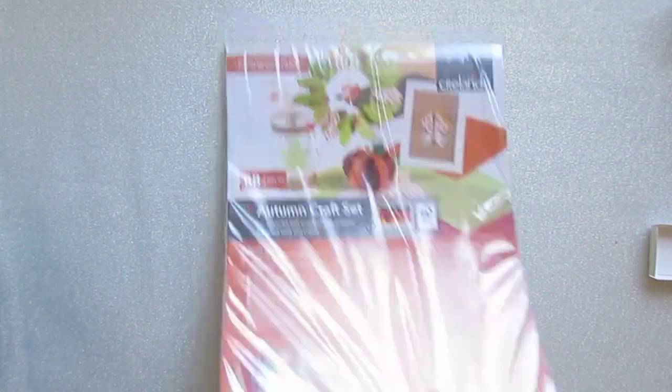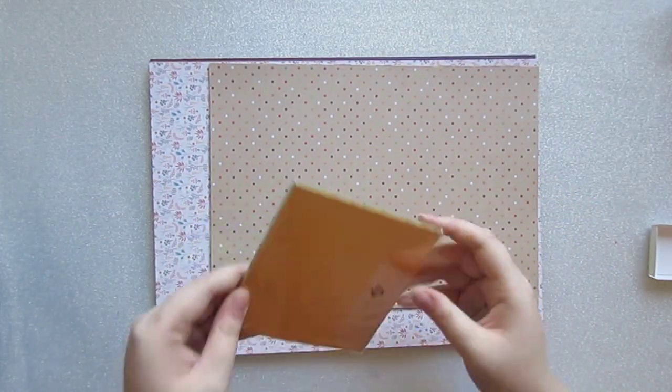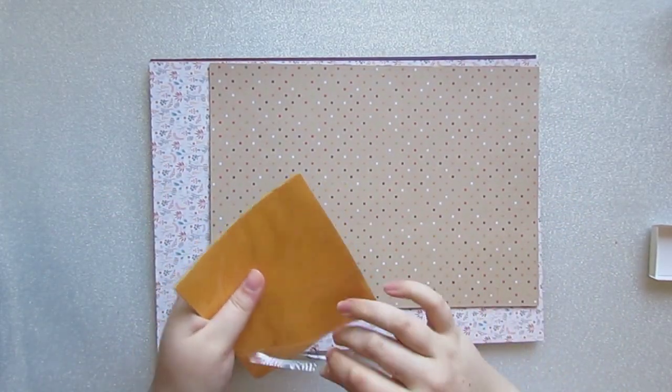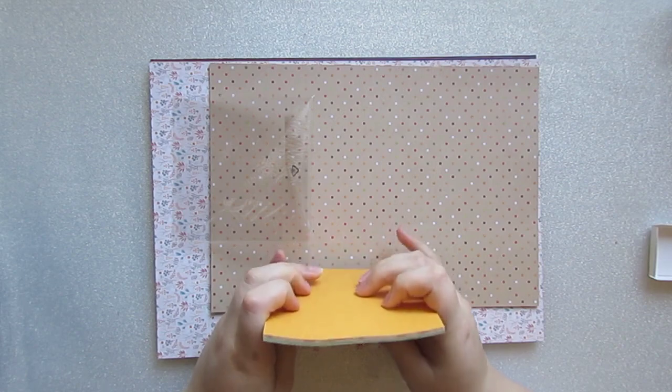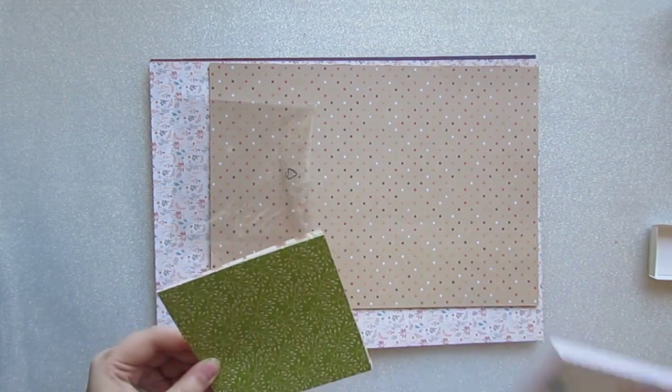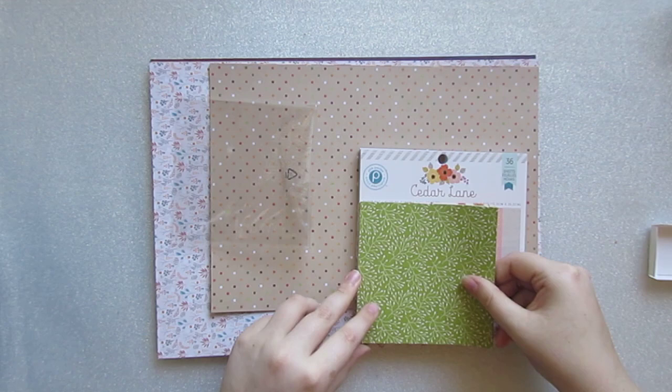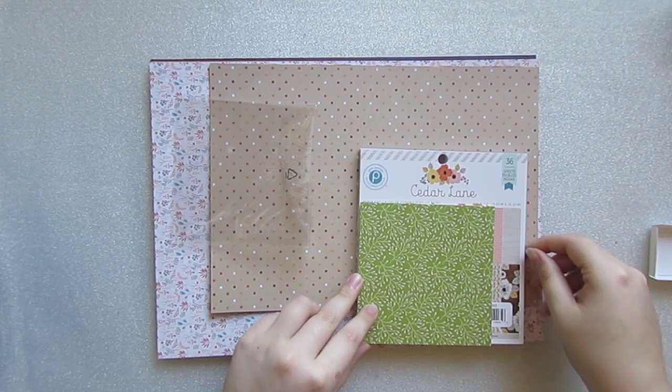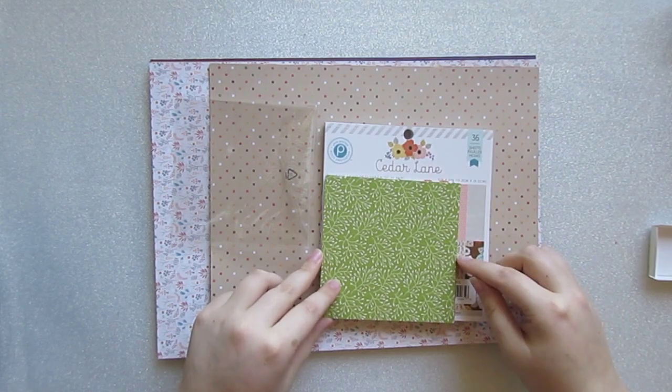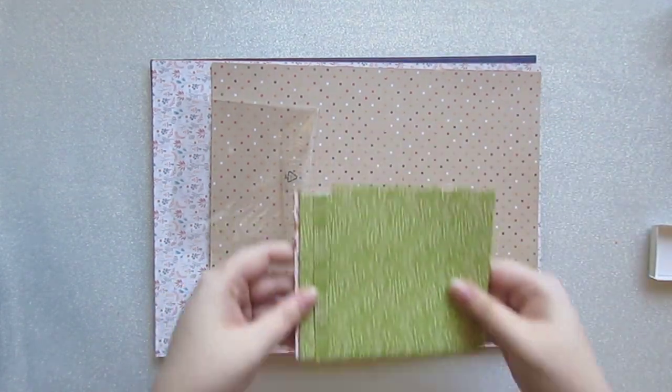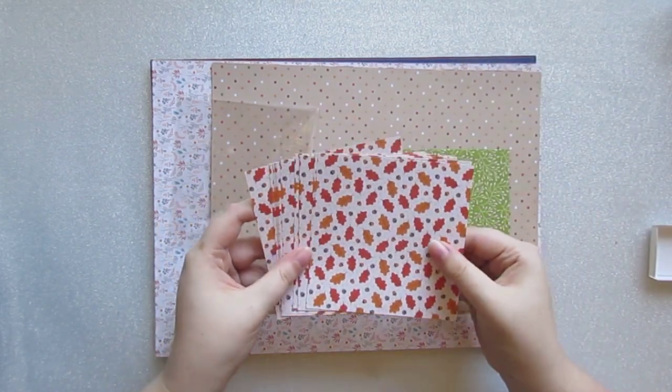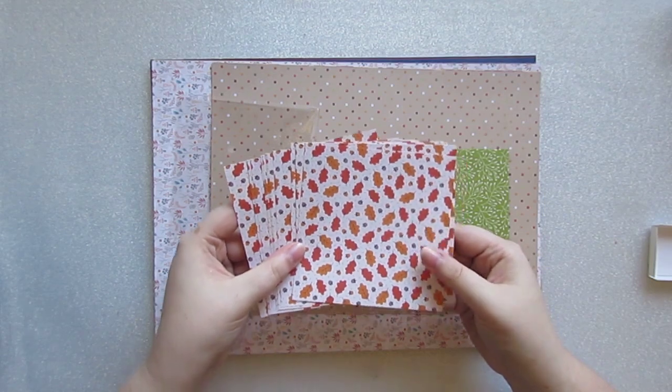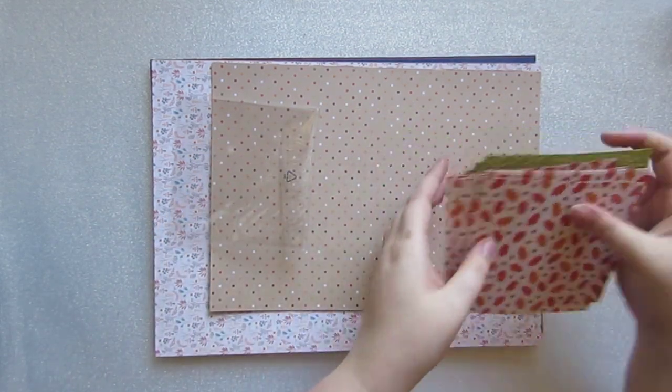I'll put that out of the way and show you the autumn craft set next. First off in this little pack, I think they're not big enough to be 6x6. They don't look quite big enough. That's a 6x6 paper pad. I'm going to say they're 4x something, much smaller than the 6x6. For these, half of them are this leaf pattern and the other half is these autumn leaves and acorns. This pattern is just gorgeous, I absolutely love that.